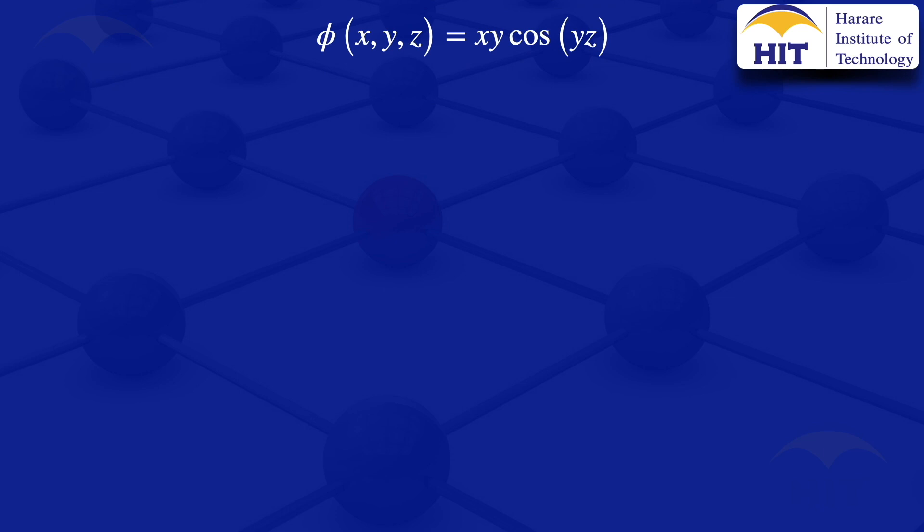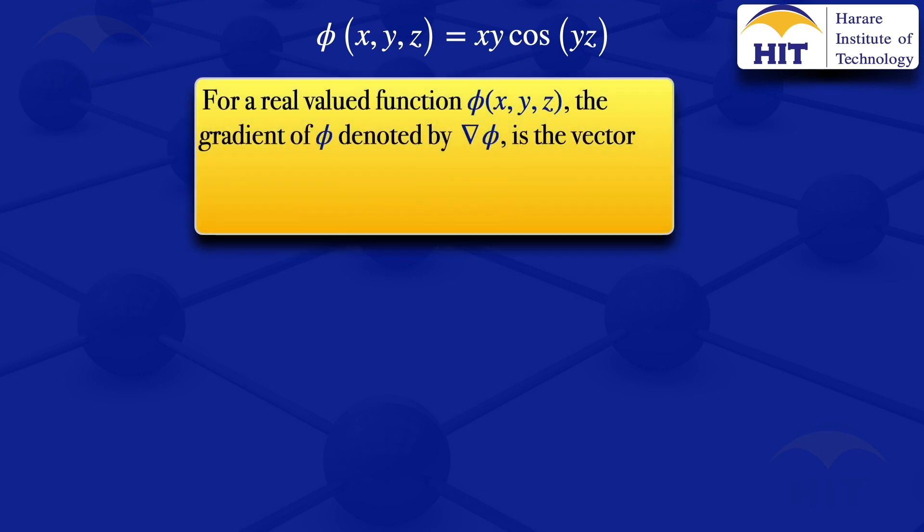Our grad φ will be the grad which has three components: the partial derivative of φ with respect to x i, plus the partial derivative of φ with respect to y j, plus the partial derivative of φ with respect to z k. So I'm saying since we have three variables, our grad there has the three components there.